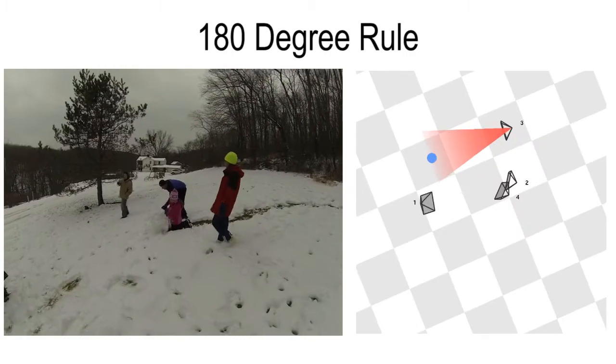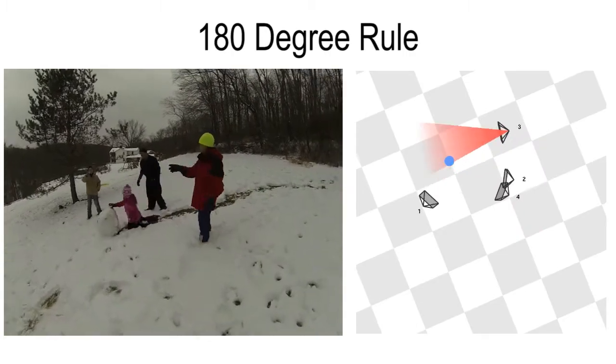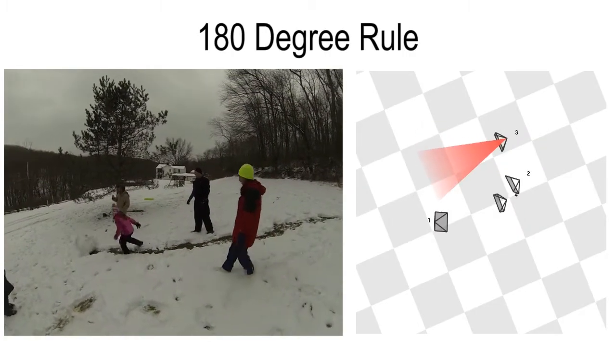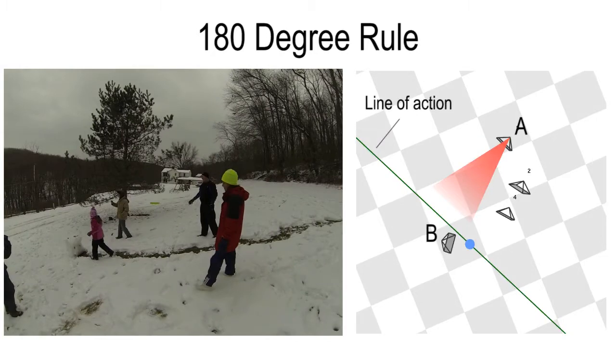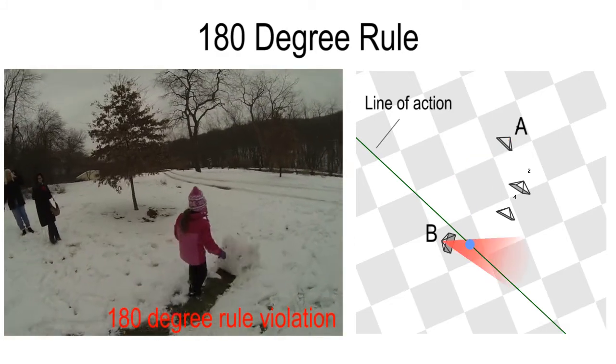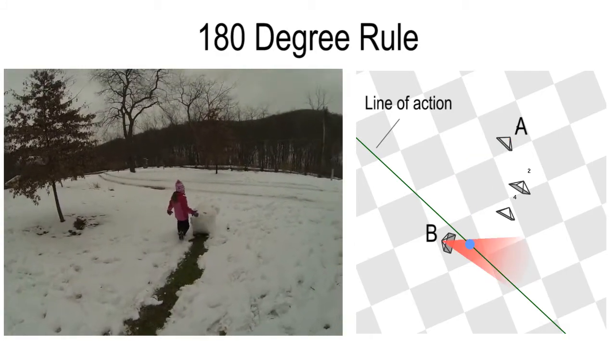In conjunction with joint attention, we use rules of cinematography to define valid cuts between cameras. The 180-degree rule prevents the camera from crossing the line of action. Here, the trajectory of the snowball forms the line of action. The transition from camera A to camera B is confusing as the motion of the snowball appears to reverse.